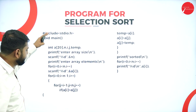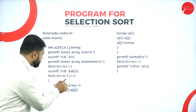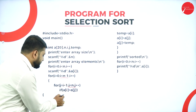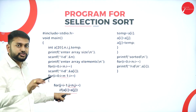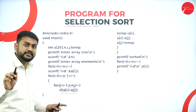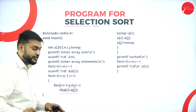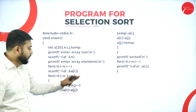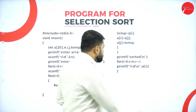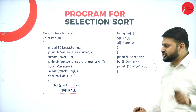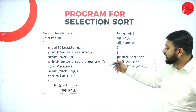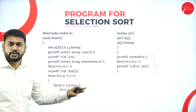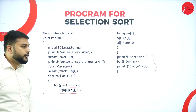For the selection sort program, everything is similar to bubble sort with two key differences: the outer loop condition is i less than n minus 1, and the inner loop uses j less than n. The condition checked is A[i] greater than A[j] — using two pointers i and j — instead of A[j] greater than A[j+1]. Just remember these changes and you can write the program.